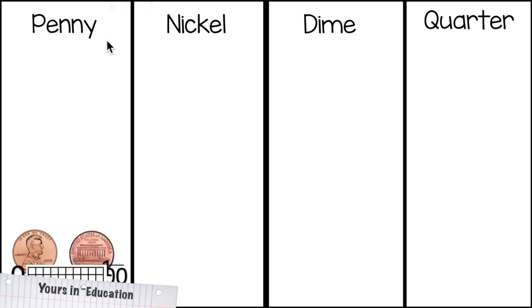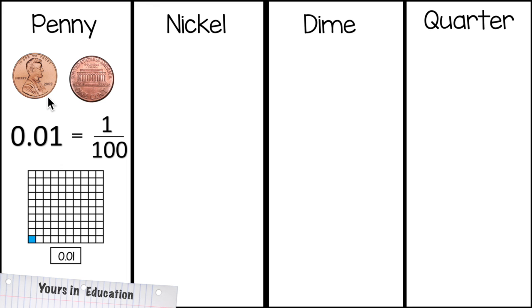We're going to start with the penny. On the face we have President Abraham Lincoln, and on tails we have the Lincoln Memorial. If you want to write one penny in decimal form, it's 0.01, in fraction it's 1/100.